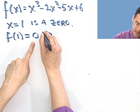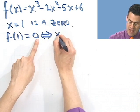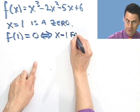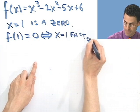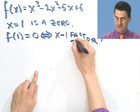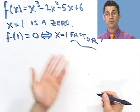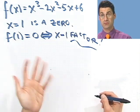Well, by the factor theorem, if this equals 0, that means x minus 1 is a factor. So if this is a factor, then what does that mean? If I divide it through into this, it should go in evenly, no remainder, and I can then see what's left.